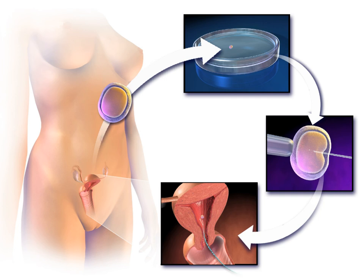The CDC defines ART to include "all fertility treatments in which both eggs and sperm are handled. In general, ART procedures involve surgically removing eggs from a woman's ovaries, combining them with sperm in the laboratory, and returning them to the woman's body or donating them to another woman." They do not include treatments in which only sperm are handled, i.e., intrauterine or artificial insemination.